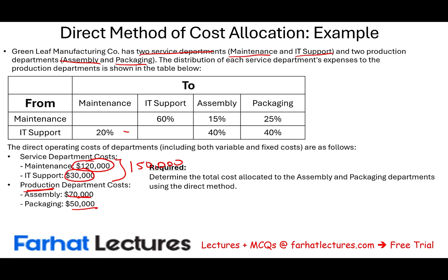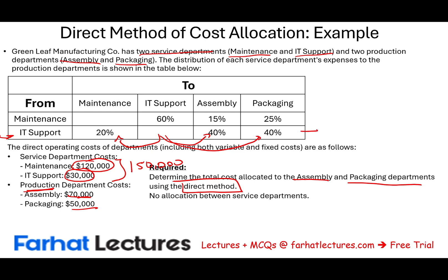We are going to determine the total cost allocated to the assembly and packaging departments using the direct method. With the direct method, you take overhead from the service department directly to the production department — no allocation between service departments. For example, in the IT department, it allocates 20% to maintenance, 40% to assembly, and 40% to packaging. Under the direct method, we ignore the 20% allocation to maintenance, leaving us with 40% and 40%, which totals 80%.